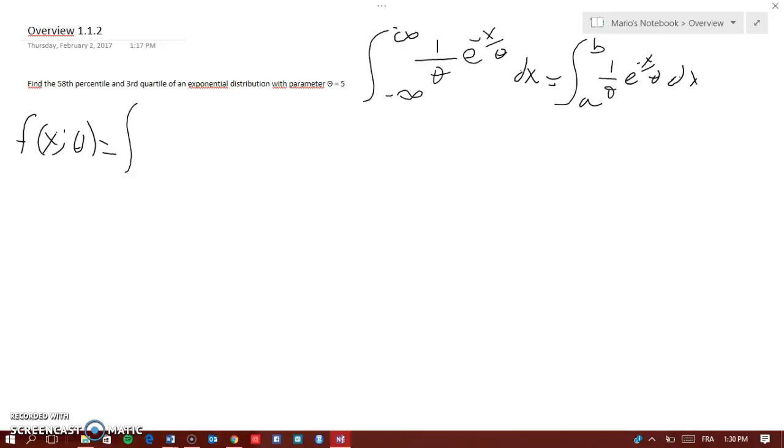So we're going to write instead f of x semi-colon theta equal to the integral from, now because it says 58th percentile so it has to start from 0 and to go to 0.58 of 1 over theta which is 5, e to the negative x over 5 dx.